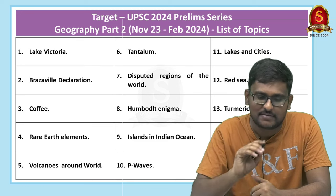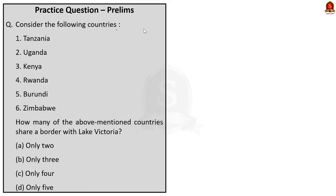Let's look at this question: Consider the following countries — Tanzania, Uganda, Kenya, Rwanda, Burundi and Zimbabwe. How many of the above mentioned countries share a border with Lake Victoria? This kind of question often appears in UPSC because it asks us to be aware of the major river basins and major lakes across the world. Lake Victoria is a very important map-based question because of its many significances.